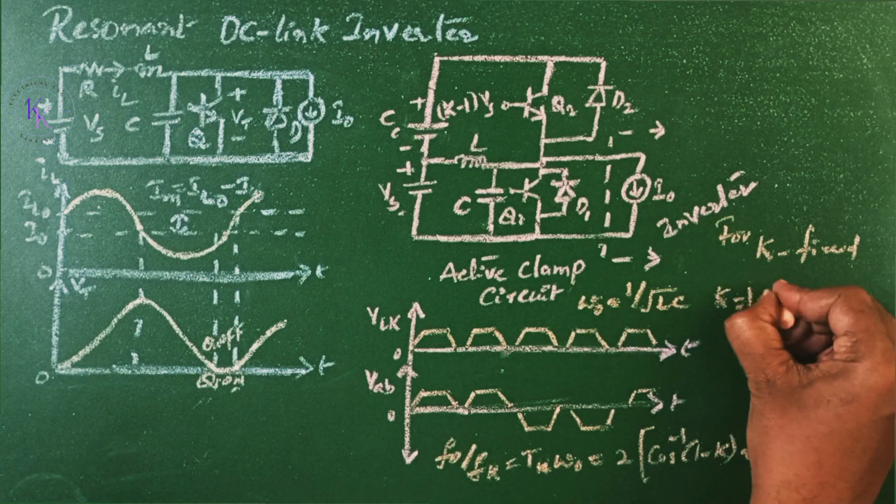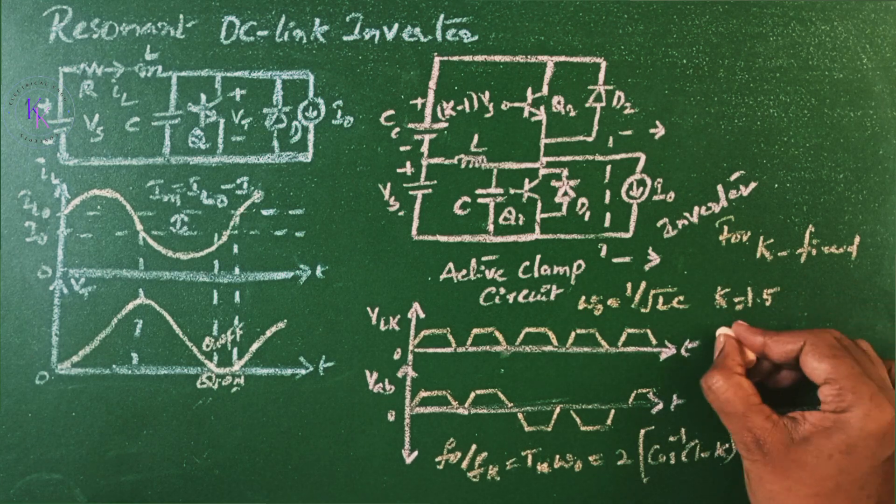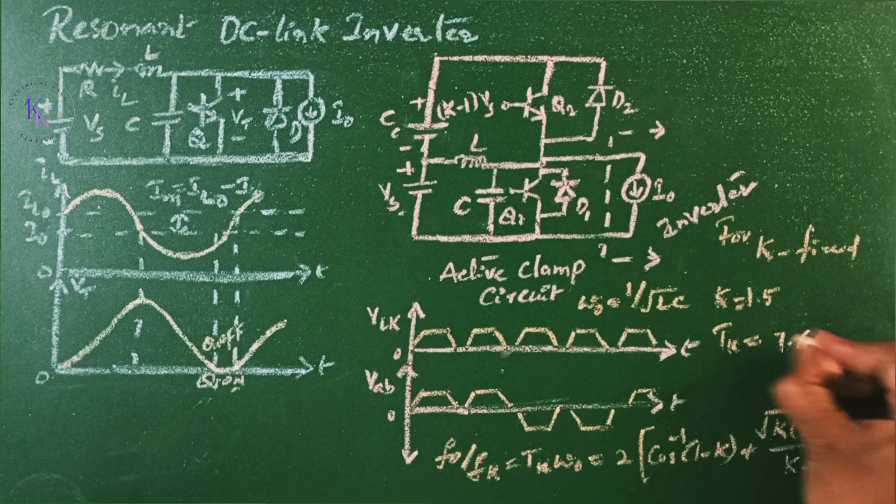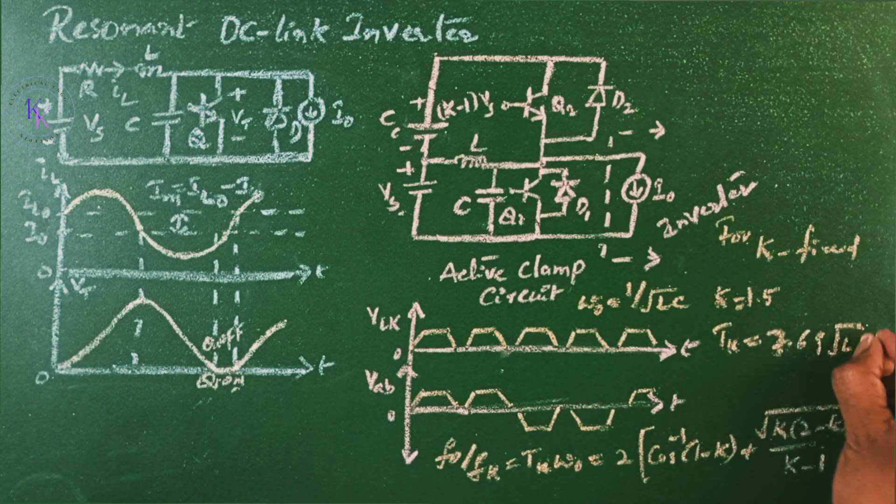For k equals to 1.5, the tank period Tk should be 7.69 square root of LC.